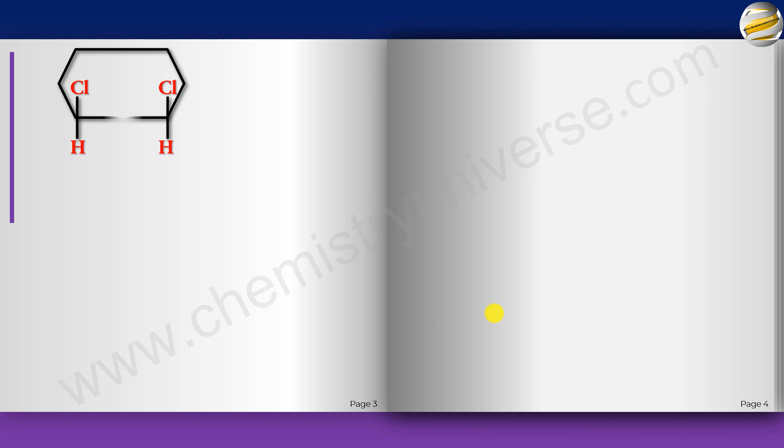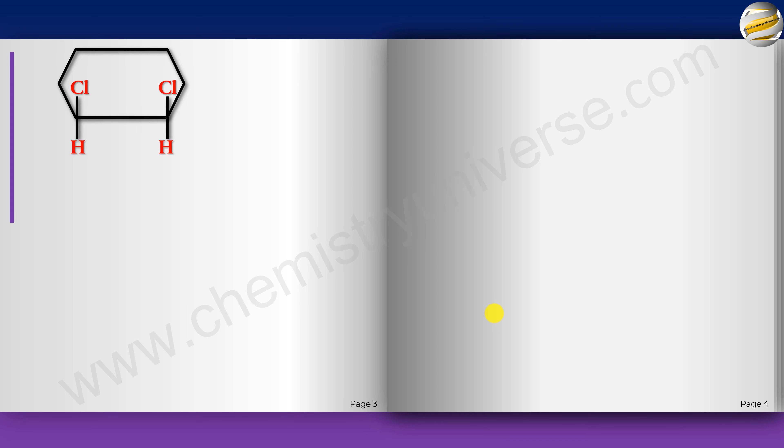The same concept applies to rings, where rotation is also restricted. In a ring, if you try to twist two groups, you cannot rotate just those two — the entire ring would have to flip or get twisted, which is not possible. So there is restricted rotation in rings as well. A molecule with two groups on adjacent carbons (positions 1 and 2) of a ring can be 1,2-cis or 1,2-trans.